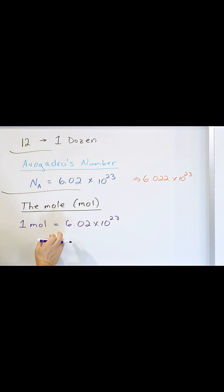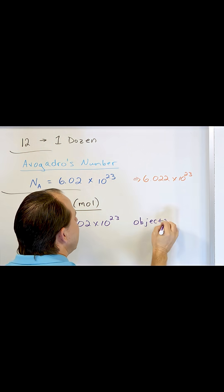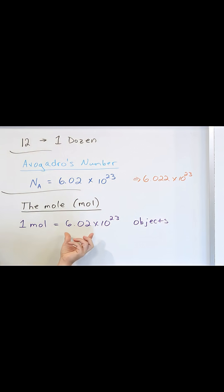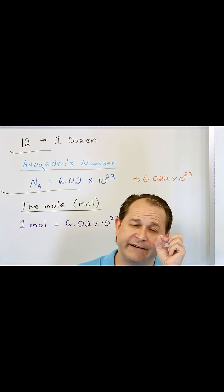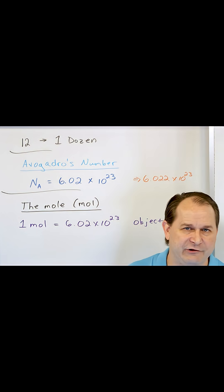And what are we talking about? One mole is 6.02 times 10 to the 23rd. Well, it's objects. And the reason I put objects here is because the mole, the number 6.02 times 10 to the 23rd, that never changes.